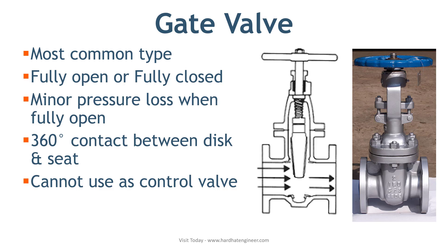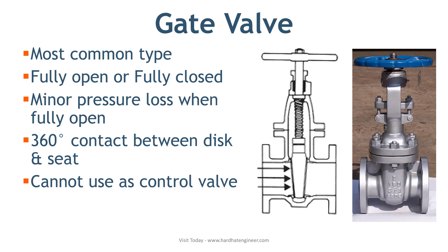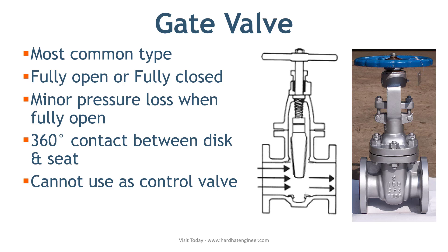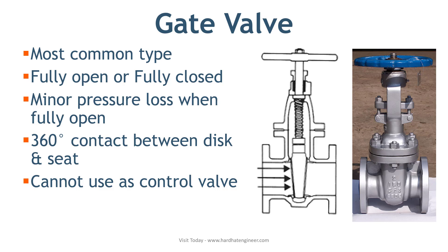Gate valves are used to start or stop the flow of liquids, but not for regulating the flow. The flow path in a gate valve gets bigger when you start opening the valve. A partially opened gate valve creates a lot of noise and vibration. Near shutoff, high fluid velocity causes the disk and seat to erode, and this will lead to leakage over a period of time. So in operation, gate valves are either fully open or fully closed.